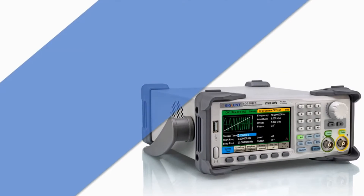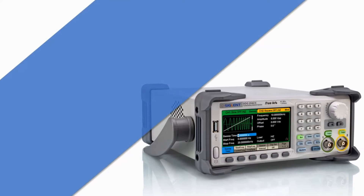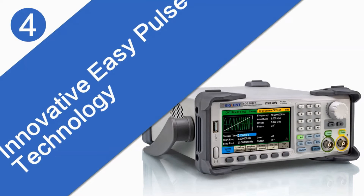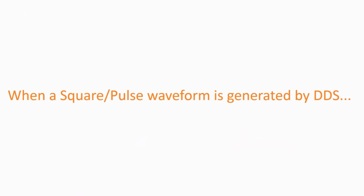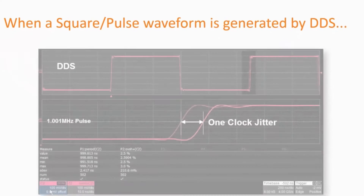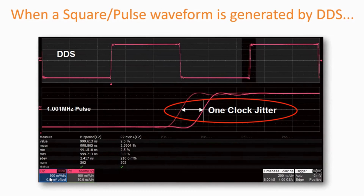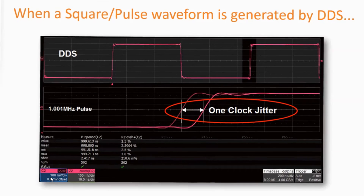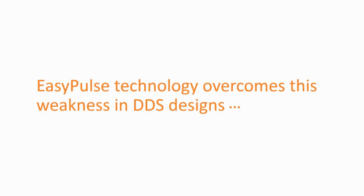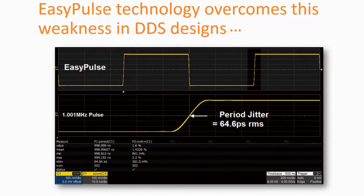The SDG2000X uses Siglent's innovative EasyPulse technology. When a square pulse waveform is generated by a DDS, there will be one clock jitter if the sampling rate is not an integer-related multiple of the output frequency. EasyPulse technology successfully overcomes this weakness in traditional DDS designs and helps produce low jitter square pulse waveforms.